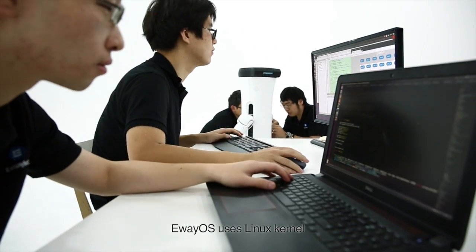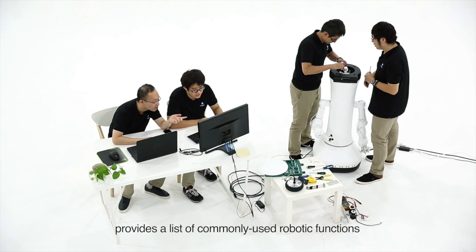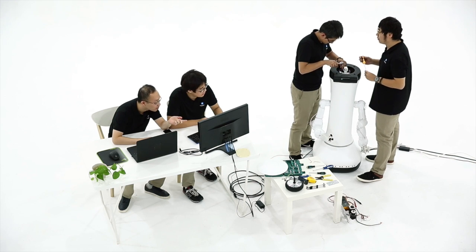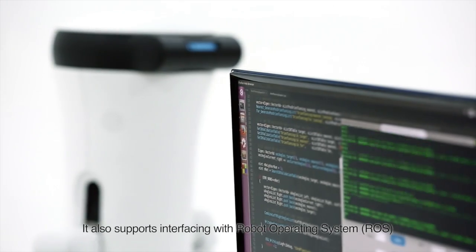eWayOS uses Linux kernel and provides a list of commonly used robotic functions. It also supports interfacing with Robot Operating System, or ROS.